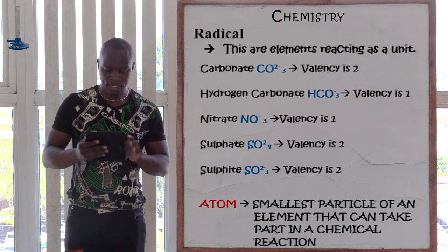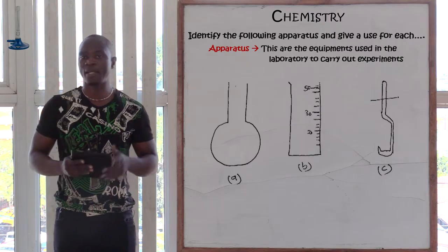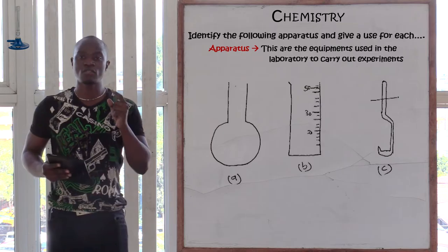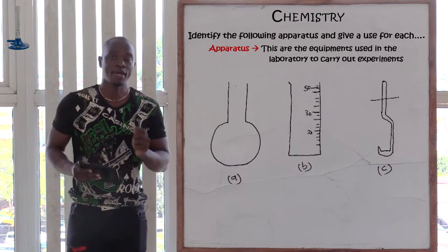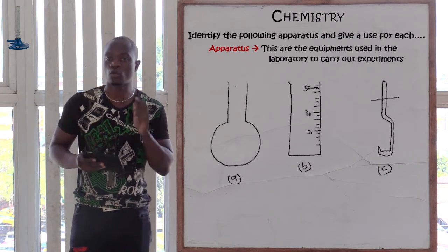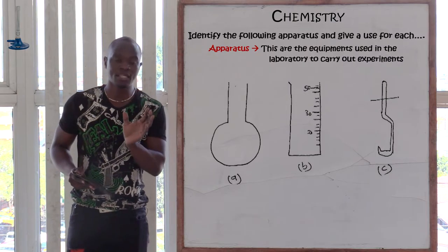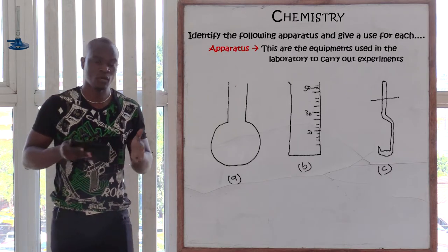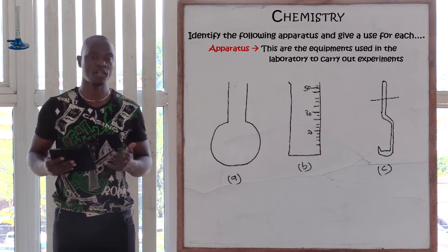Let's go to question number two, which is asking: identify the following apparatus and give the use of the apparatus. First of all, let's define what is an apparatus. An apparatus refers to the equipment used in the laboratory to carry out experiments. You should never say 'equipments used in the lab' — it is referred to as laboratory.